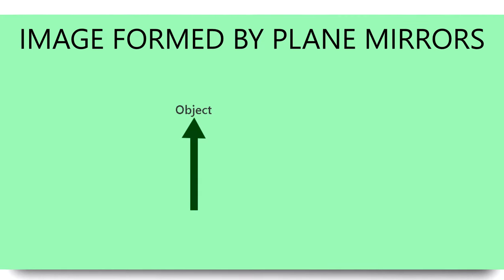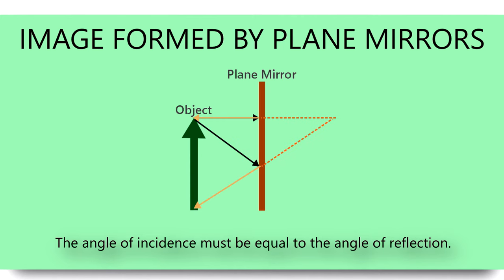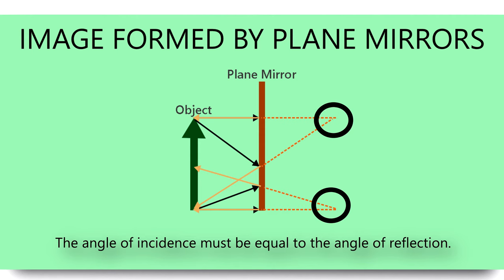Image formed by plane mirrors: let's consider an object placed in front of a plane mirror and apply a ray diagram to locate and describe the image formed. We draw an incident ray from the object striking the mirror, then apply the law of reflection to draw the reflected ray, and extend the reflected ray to find the image formed. The point of intersection of two reflected rays is where the image is formed.